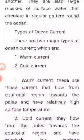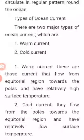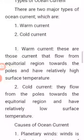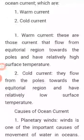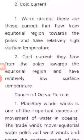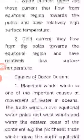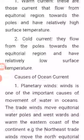Types of ocean currents: there are two major types, which are warm currents and cold currents. Warm currents are those that flow from the equatorial region towards the poles and have relatively high surface temperature. Cold currents flow from the poles towards the equatorial region and have relatively low surface temperature.